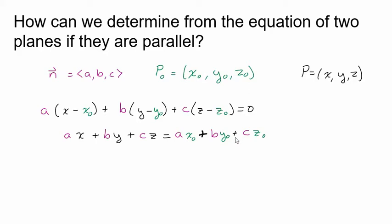Usually what we do is just denote that right-hand side with some other letter like d. So the important thing, if you have an equation of a plane, is the a, b, and c — that's your normal vector. That's telling you a vector that's perpendicular to your plane, so it's determining the direction and slant of your plane.